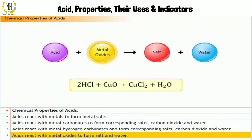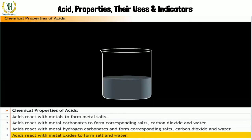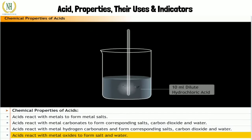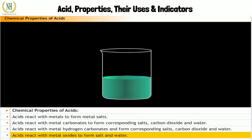Acids react with metal oxide to form salt and water. Let's conduct an experiment to prove this chemical property. Take 10 milliliters dilute hydrochloric acid in a beaker. Add two grams of copper oxide to the beaker. Stir the mixture continuously. You will find that the black copper oxide disappears and a blue-green solution is formed in its place. This blue-green solution is copper chloride.